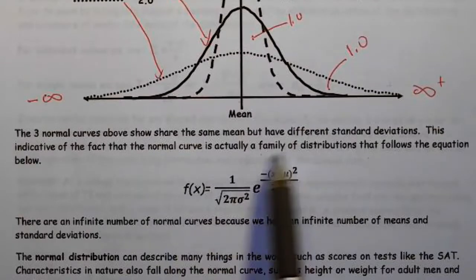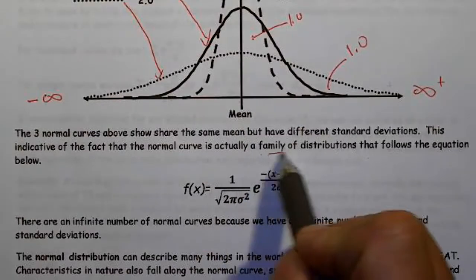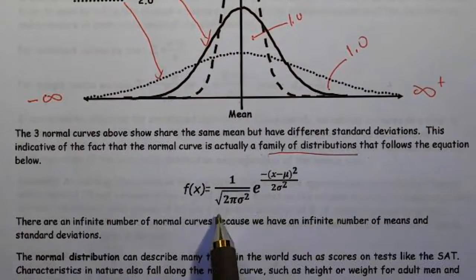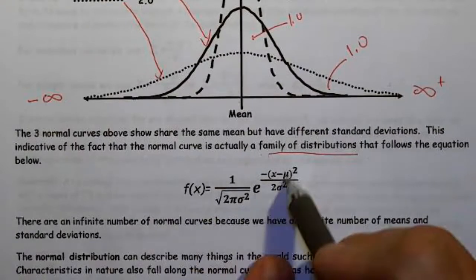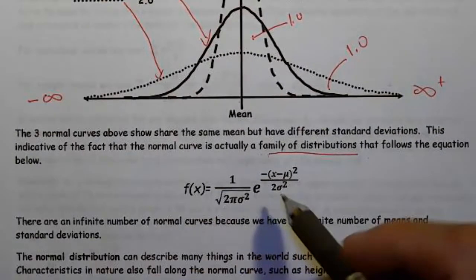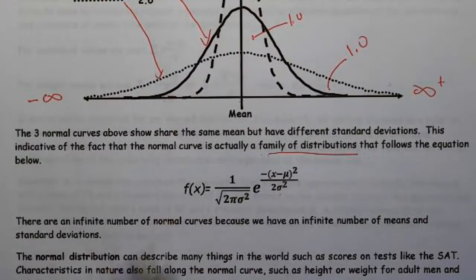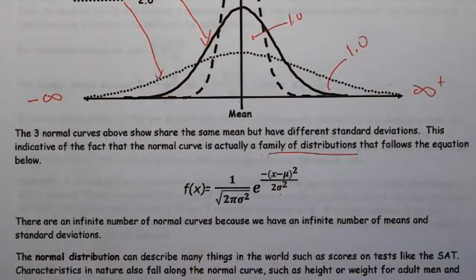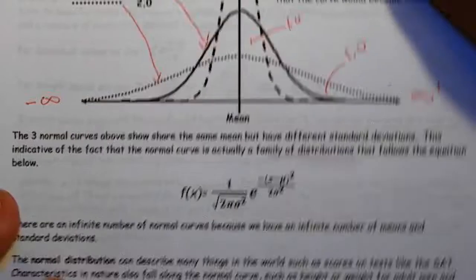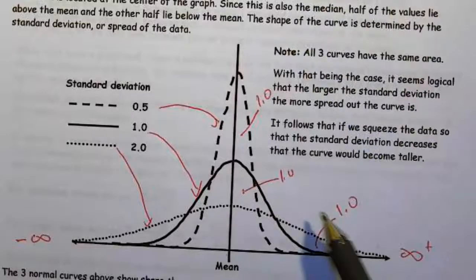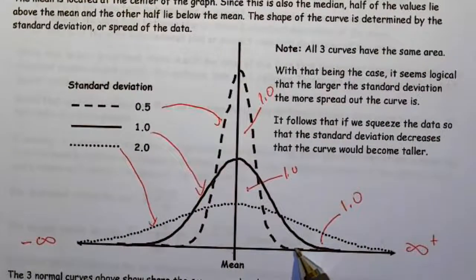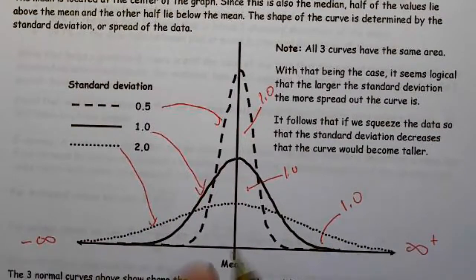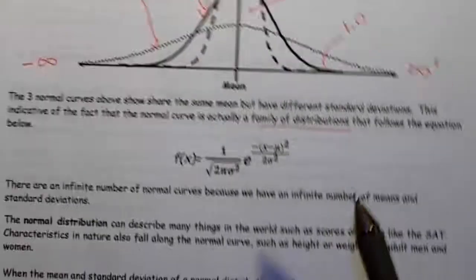And as I said, it's actually a family of distributions that follows this basic format. Of course, the mean and the standard deviation can vary for each one. And because there's an infinite number, because the mean and standard deviation vary, there's actually an infinite number of means and standard deviations, which means there's an infinite number of curves that can be normal. However, all of them have this area under the curve. They all have an area of one. They all center about the mean and they all extend from negative infinity to infinity.